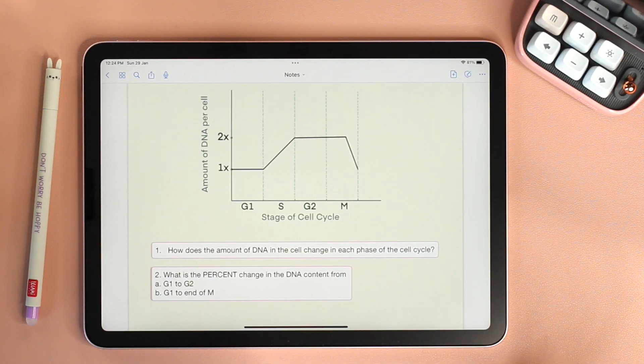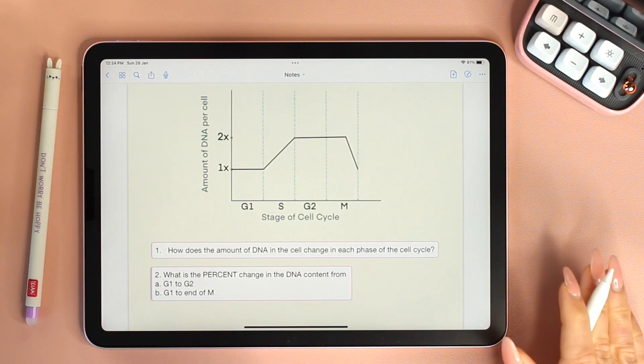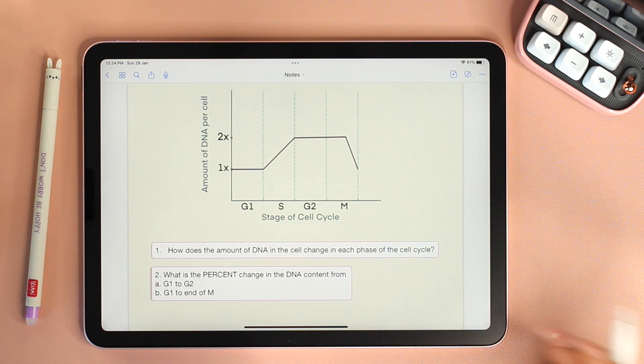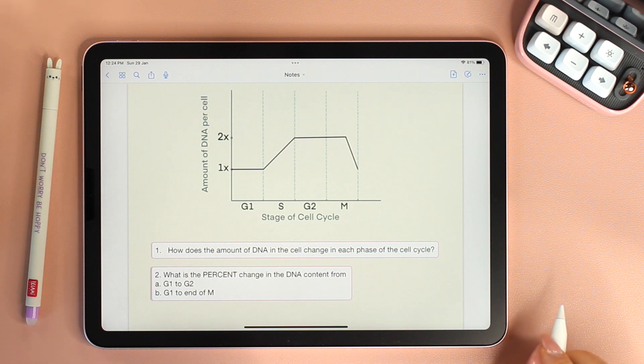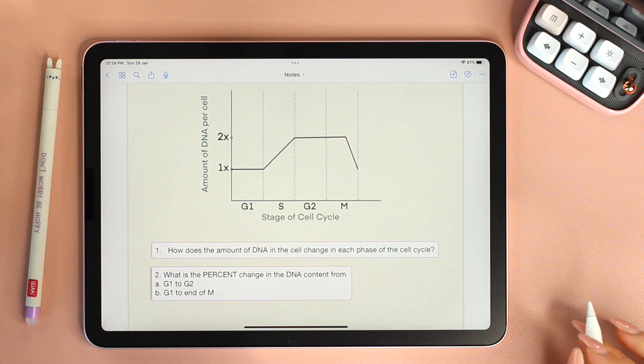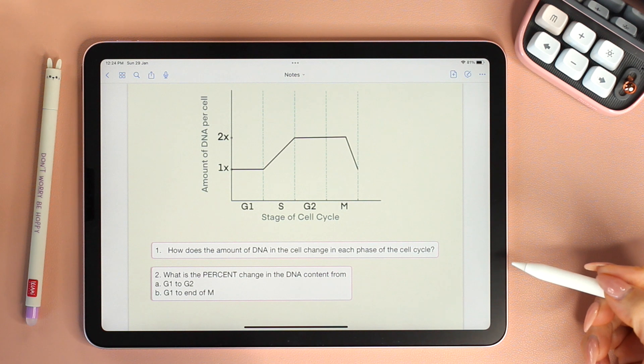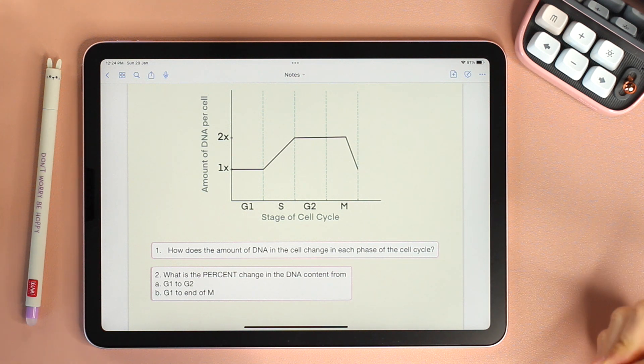So now let's test our knowledge with this question. Pause the video, try to answer them, and then hit play so that we can go over it together. The first question says, how does the amount of DNA in the cell change in each phase of the cell cycle?